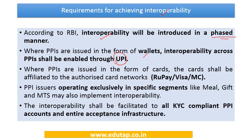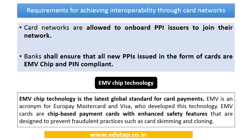Where PPIs are issued in the form of cards, they shall have to be affiliated to an authorized card network for the purpose of interoperability — such as RuPay, Visa, or Mastercard. PPI issuers operating exclusively in specific segments like meal or gift cards, as well as mass transit system PPIs, may also implement interoperability. Interoperability shall be facilitated to all KYC-compliant PPI accounts.